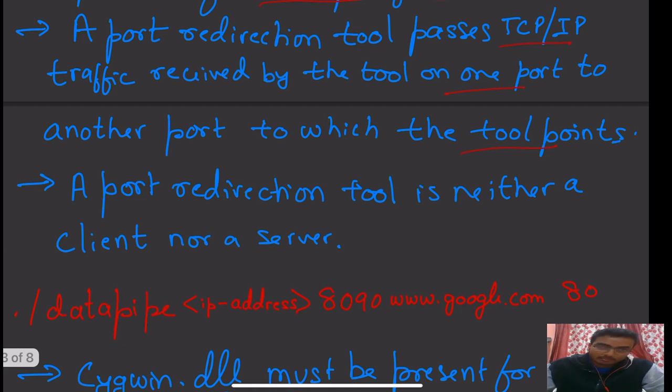This is an example of the syntax of data pipe. We write data pipe, the IP address, port number, website that we want, the website address, and its port number.